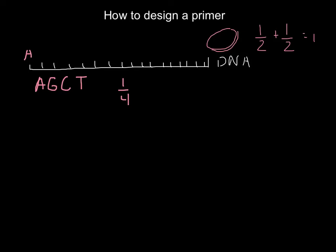For each of these bases, chances would be the same. These are independent events. For example, if we have A on the first place, it doesn't affect in any way what the next base would be. So we call it independent events.